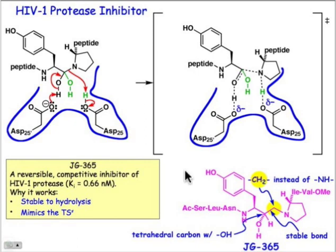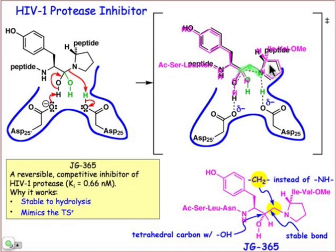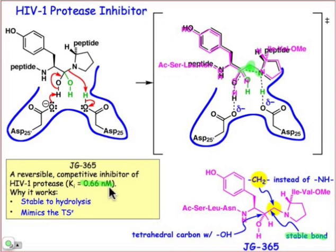we can imagine how this molecule is going to basically be superimposable directly on the transition state structure that we have drawn for you here. The only difference is in this CH2 group that connects to the proline, which is provided because it gives that stable bond. So that was a solution to the problem. It binds quite tightly—0.66 nanomolar is the dissociation constant—and so this turned out to be quite an effective inhibitor of the HIV virus.